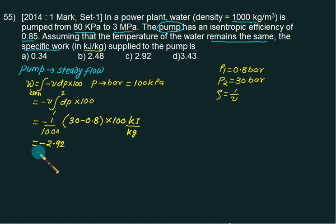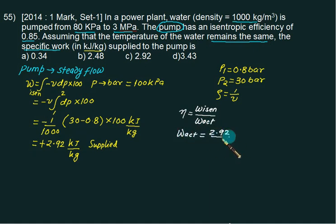In this problem, pump efficiency is also given to us. If you write the word supplied, you have to take the positive sign because the supplied sign includes the minus sign. The efficiency of pump is always ηpump = wisentropic/wactual. So wactual will be wisentropic = 2.92 and efficiency is 0.85. This answer is very close to 3.43, so choice D is correct.